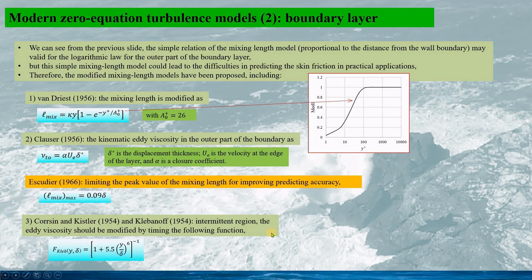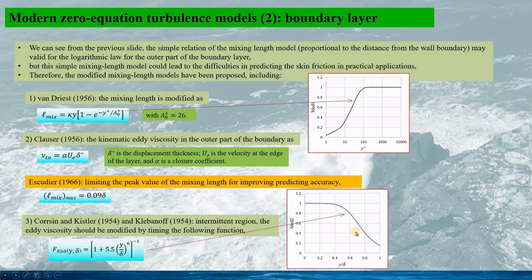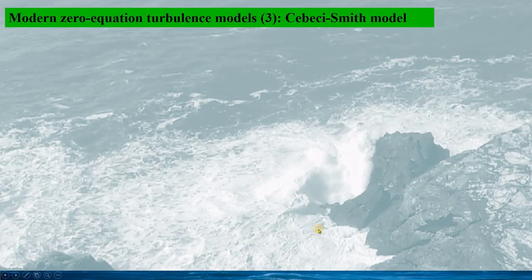So in the intermittent region, the eddy viscosity should be modified by timing the following function, the Klebanoff function, by this. And this modification can be drawn out as this. So the Klebanoff function is a modification for the eddy viscosity in the outer boundaries, when y is larger than 0.4 the boundary layer thickness.